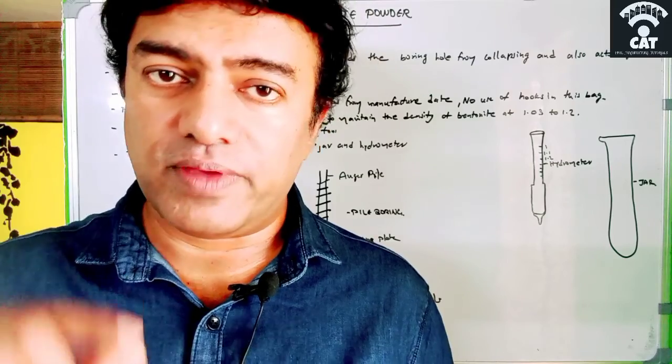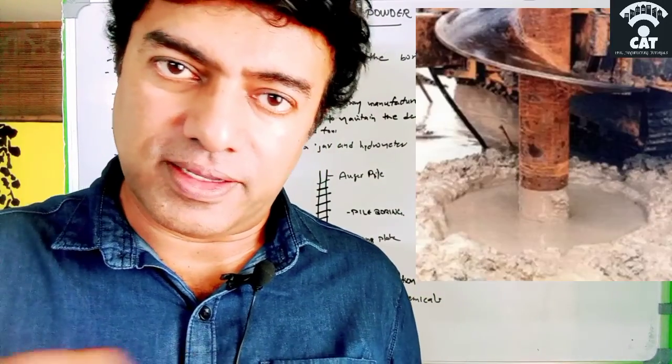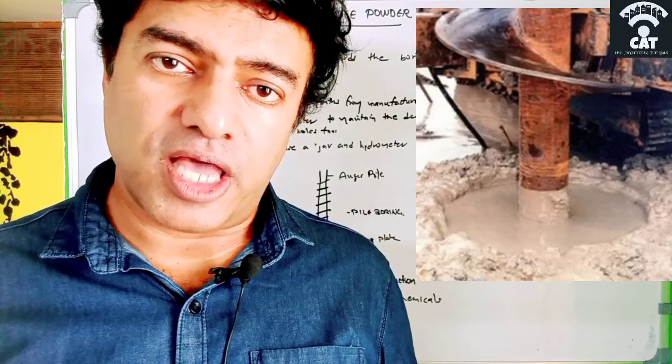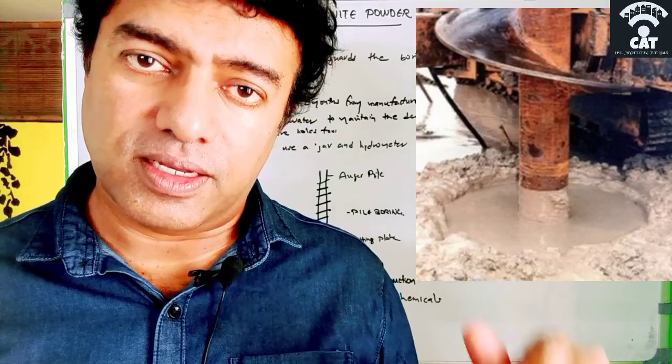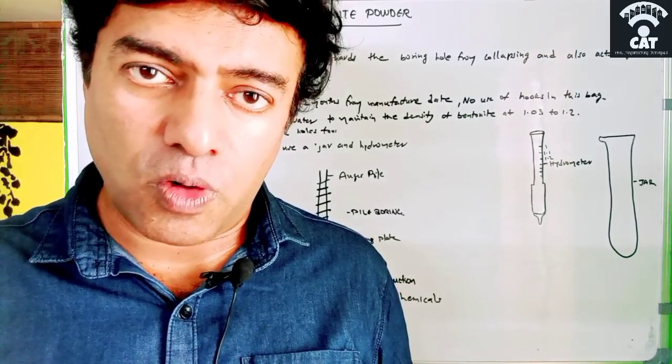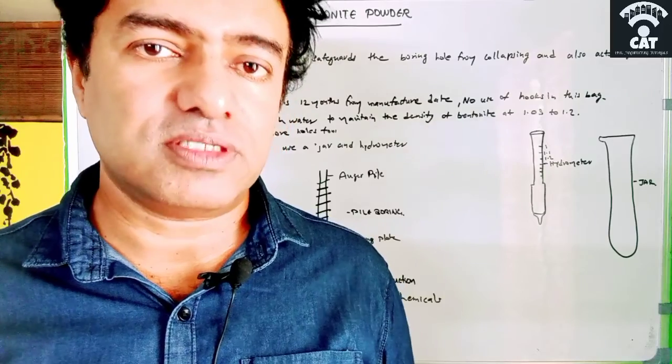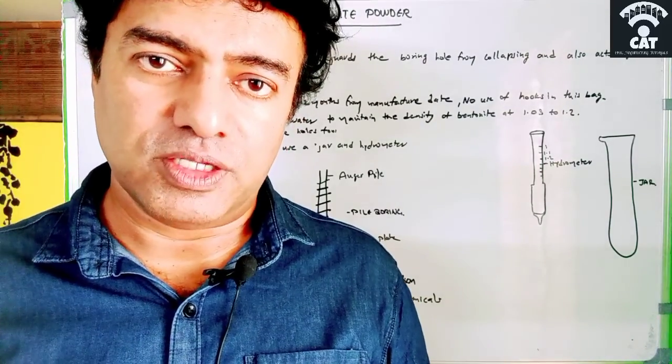Like when we are doing piling with an auger pile, it creates a hole in the earth surface. As we know, there is always the chance of that soil to come again into the borehole if it is not stabilized. When you make a hole in earth, the soil is not stabilized - the same soil can come into it by collapsing.